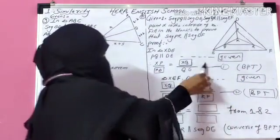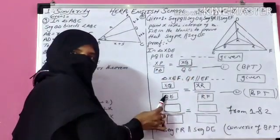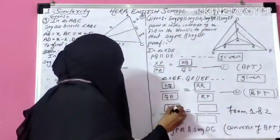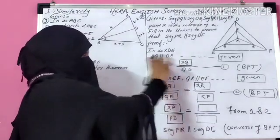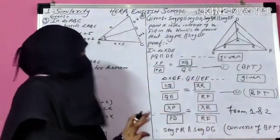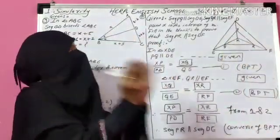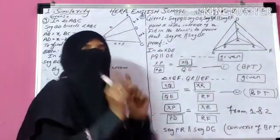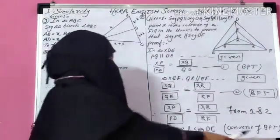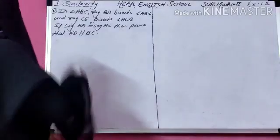Now observe equations 1 and 2. The ratio XQ upon QE is the same in both. Therefore, from 1 and 2: XP upon PD equals XR upon RF. If XP upon PD equals XR upon RF, meaning a line divides two sides in equal ratio, then that line is parallel to the third side — that is the converse of BPT theorem. So by converse of BPT, PR is parallel to DF.